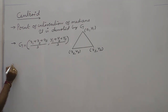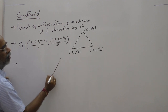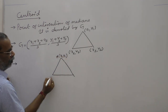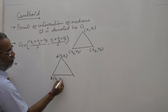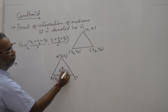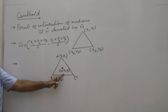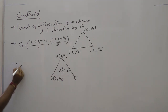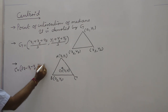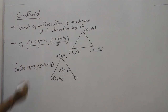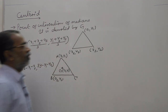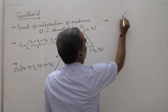If two vertices of a triangle are given but the third vertex is not given, and instead the centroid (x, y) is given, then the third vertex can be written directly as (3x − x₁ − x₂, 3y − y₁ − y₂). We apply this formula when two vertices and the centroid are given.